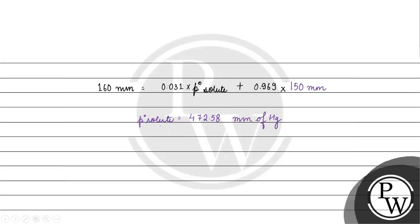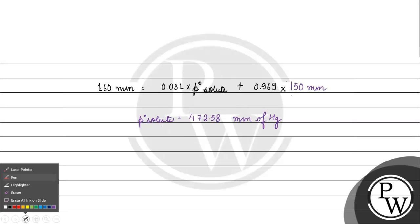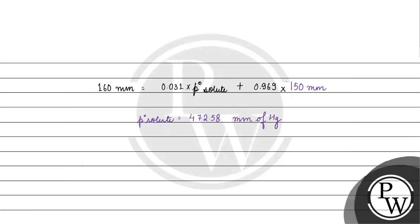So the vapor pressure of pure liquid X will be 472.58 mm of Hg. This is the final answer for this question — 472.58 mm Hg will be the vapor pressure of the pure solute. I hope you understood it well. Thank you and all the best!